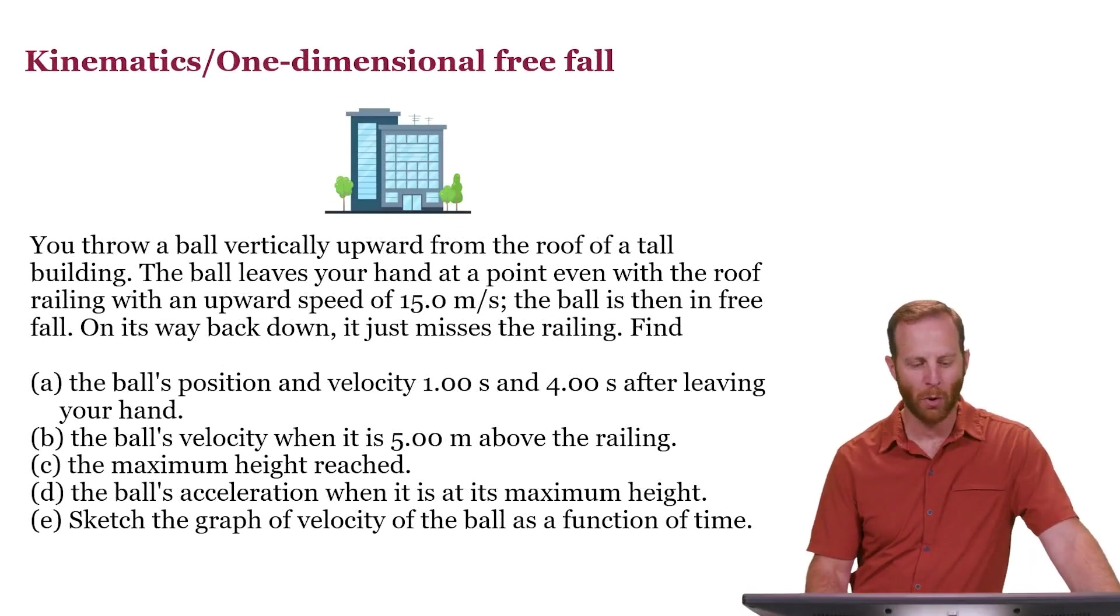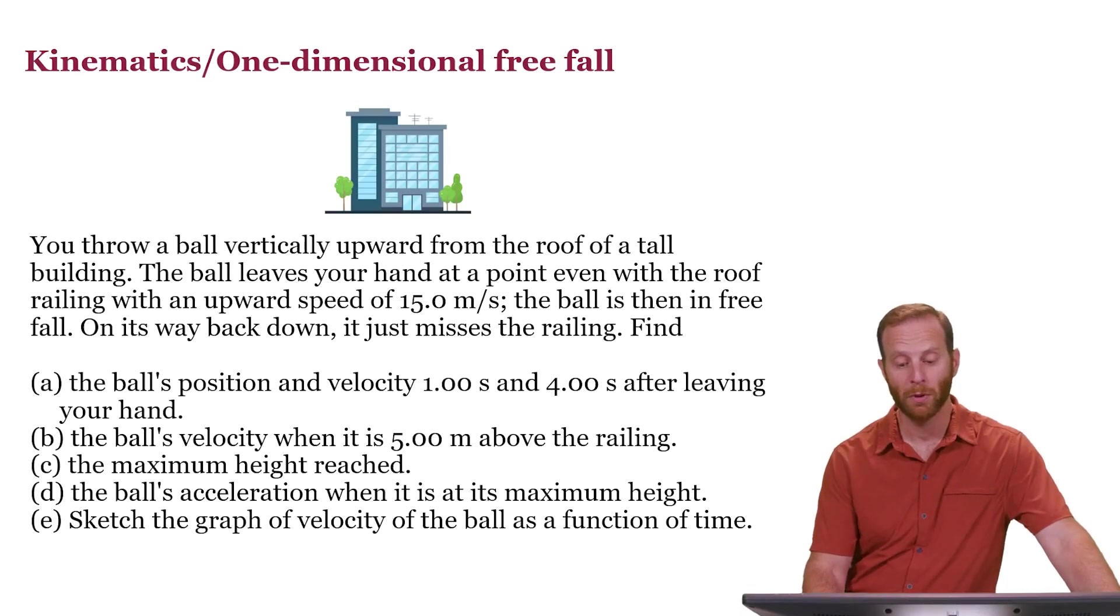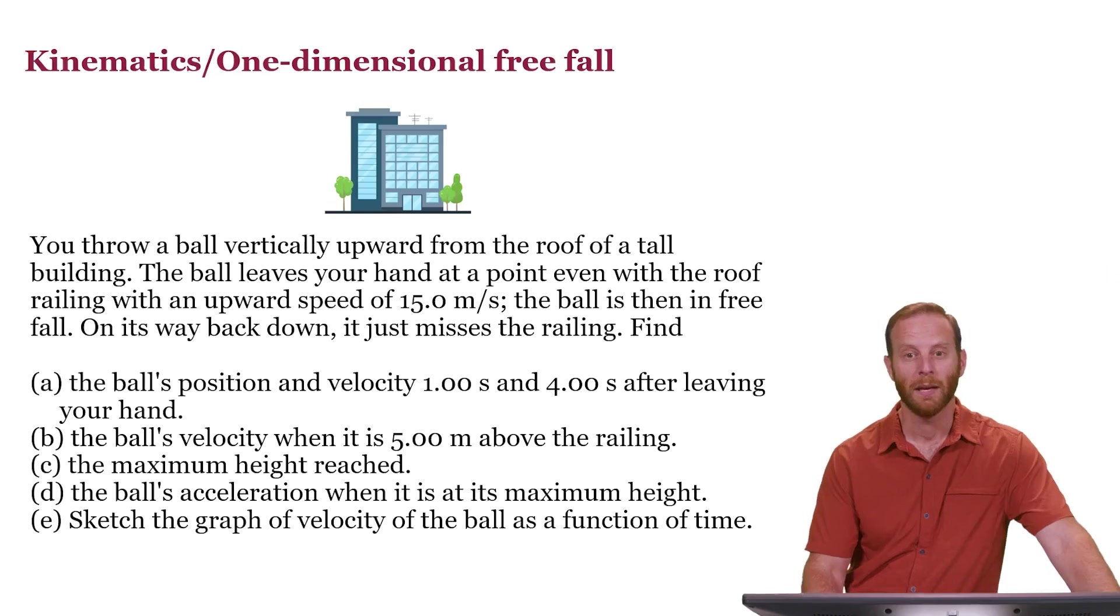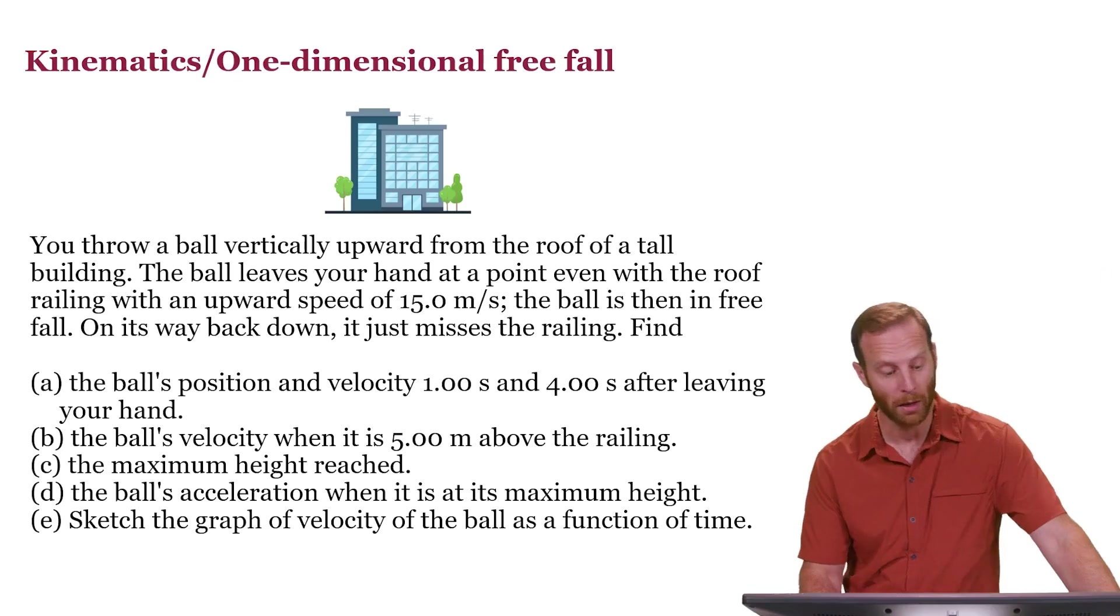Okay, in this problem you throw a ball vertically upward from the roof of a tall building. The ball leaves your hand at a point even with the roof railing with an upward speed of 15 meters per second. The ball is then in free fall. On its way back down it just misses the railing and we're asked to find a number of things.